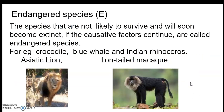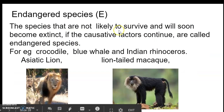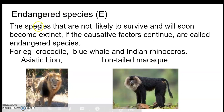The first category which belongs to threatened species is endangered species. Endangered species are those species that are not likely to survive and will soon become extinct if the causative factors continue. These harmful factors are pushing these species toward extinction.